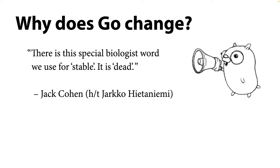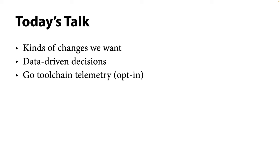This talk is about how we decide which changes to make. There are three parts: the first is about what kinds of changes we want and don't want for Go; the second is about how we use data to decide which changes to make; and the third is about our plan to add opt-in telemetry to the Go toolchain to better understand how Go is being used and when it's misbehaving. By the end, you'll understand why opt-in telemetry is a good additional source of data, and maybe even be willing to opt in.